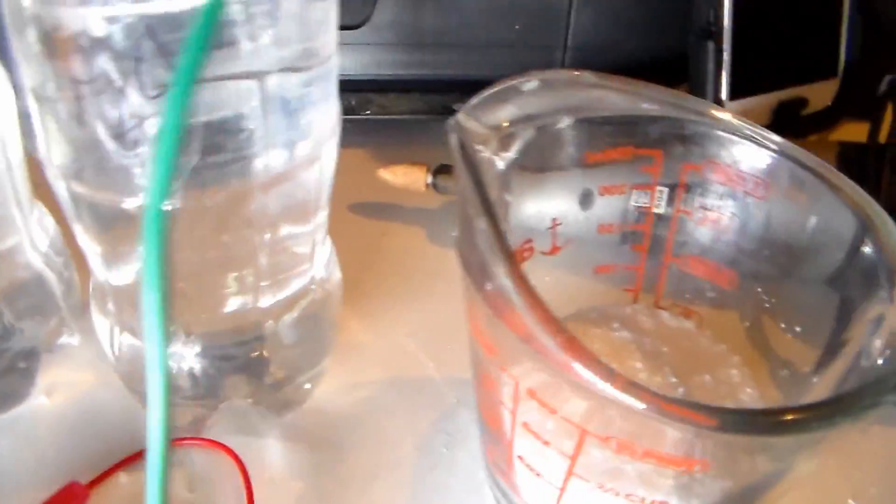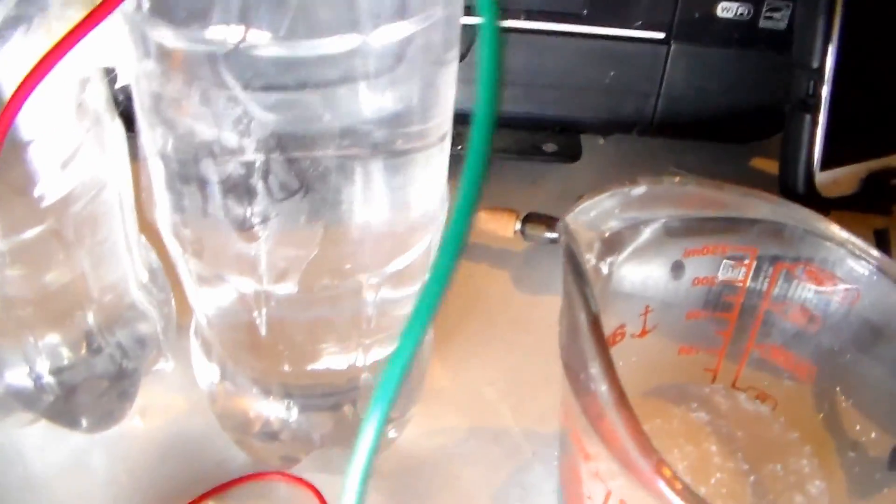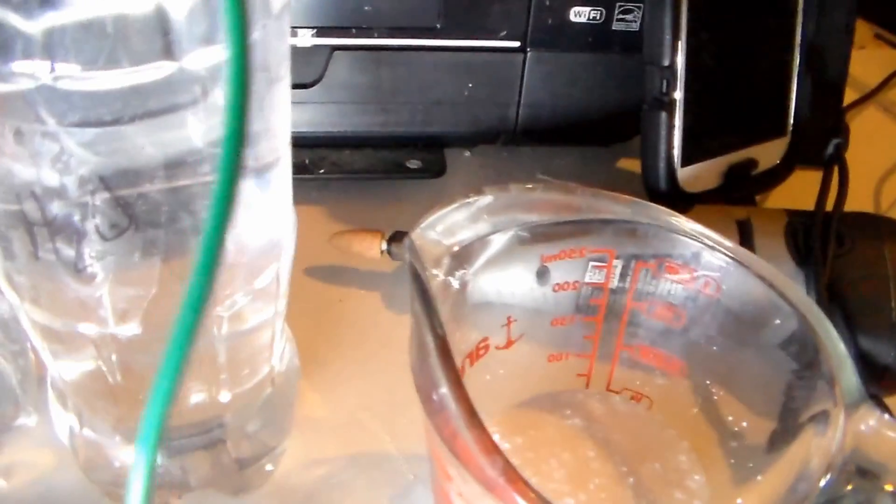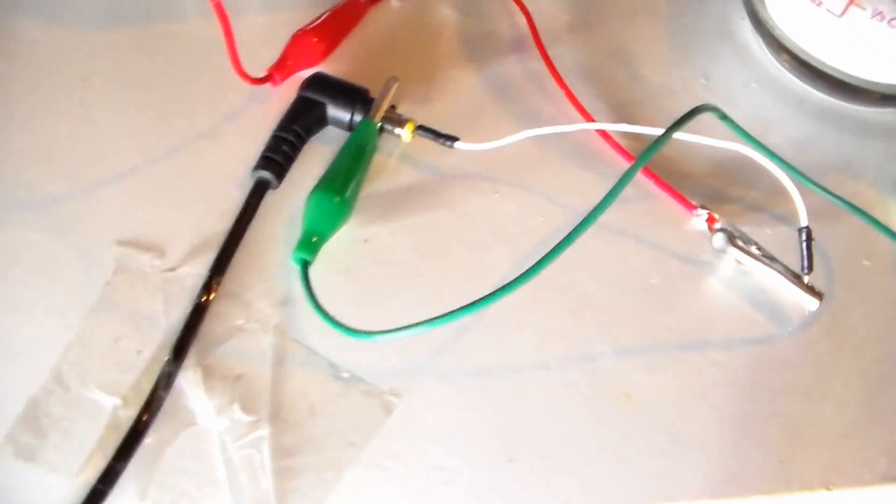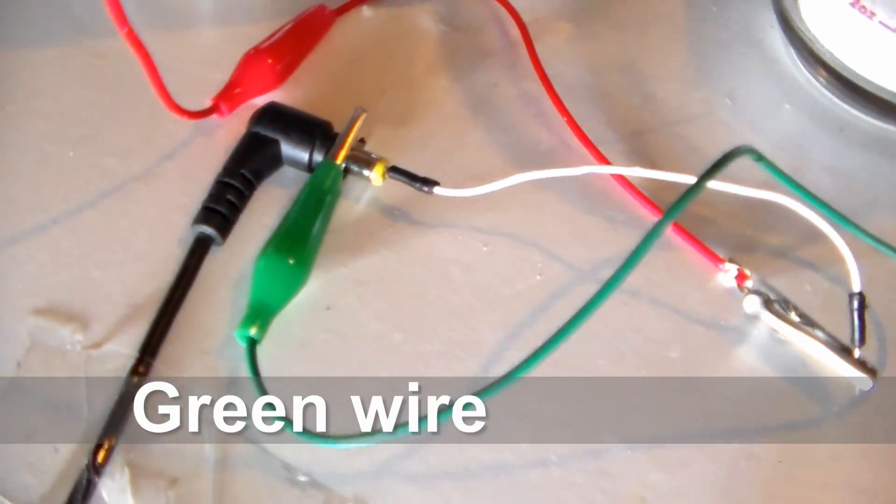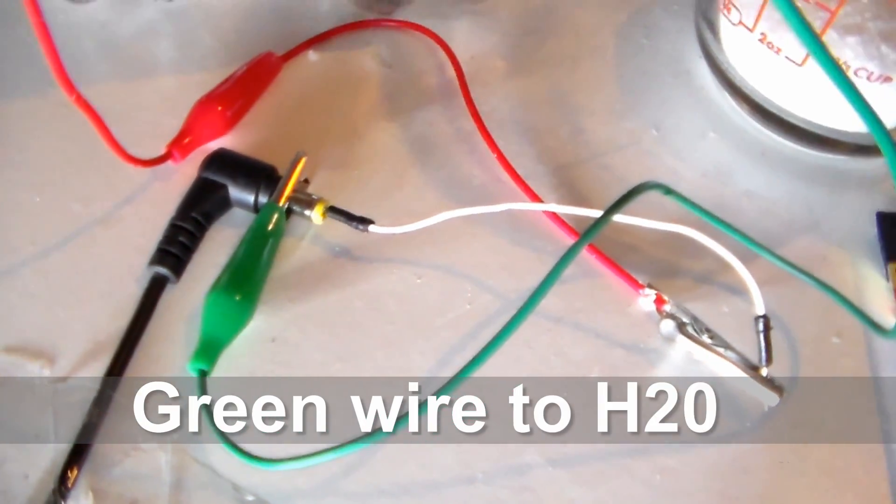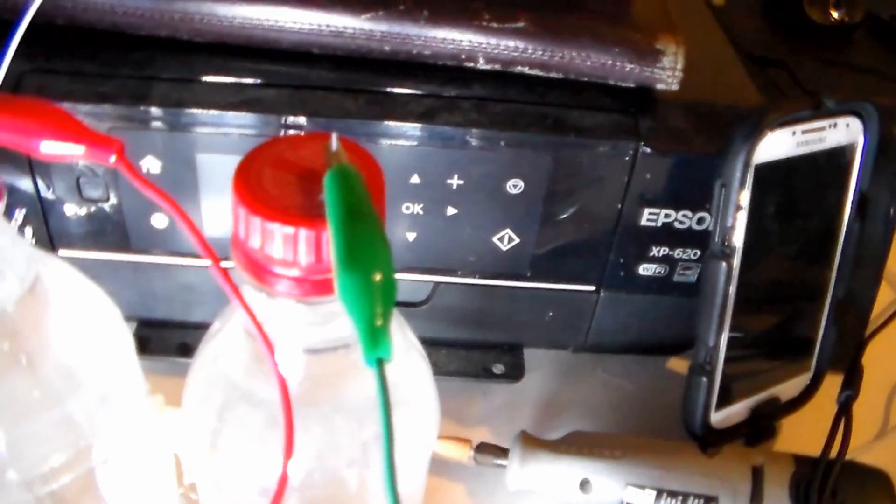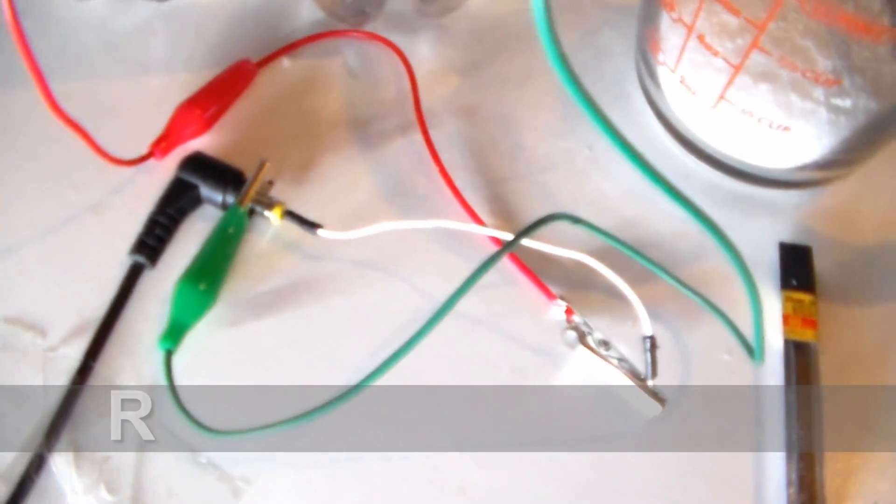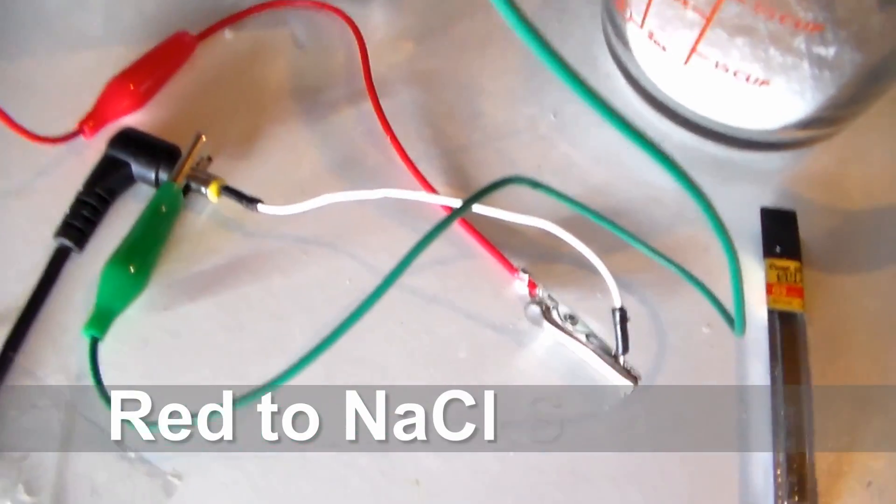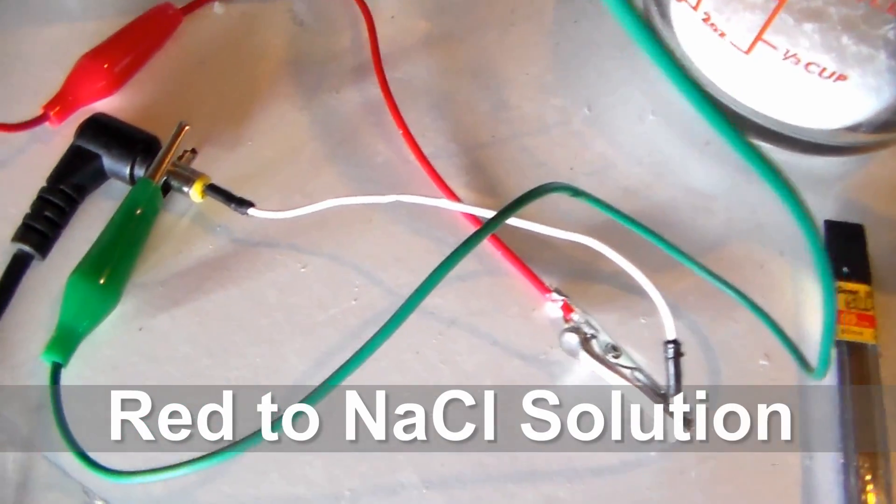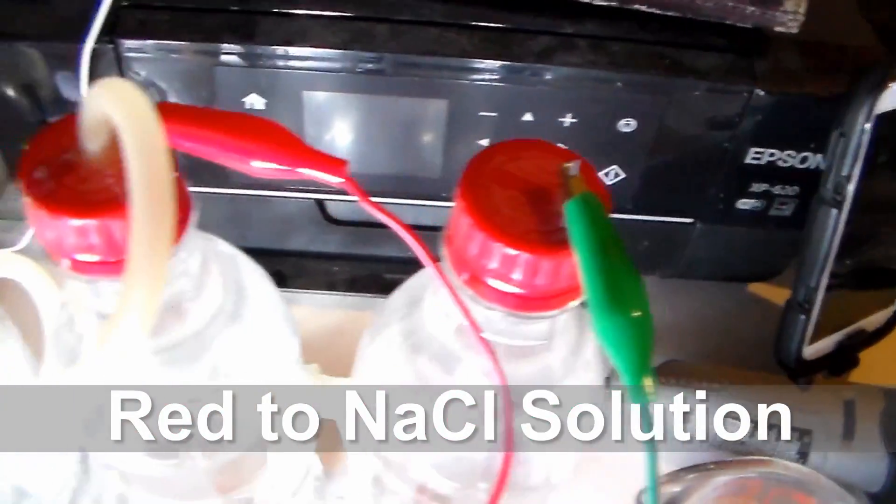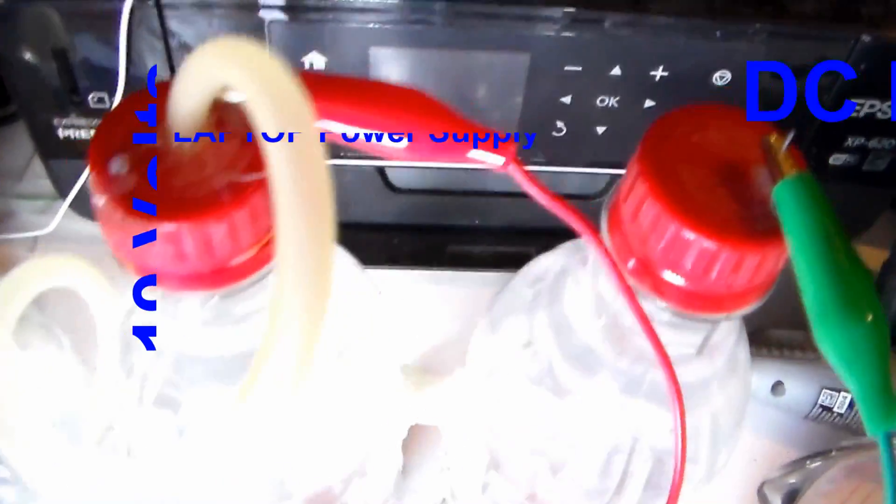In this bottle I have regular water, H2O. From my power supply, the green represents negative and goes to the water. The red is connected to that jumper in the middle and goes to the top.